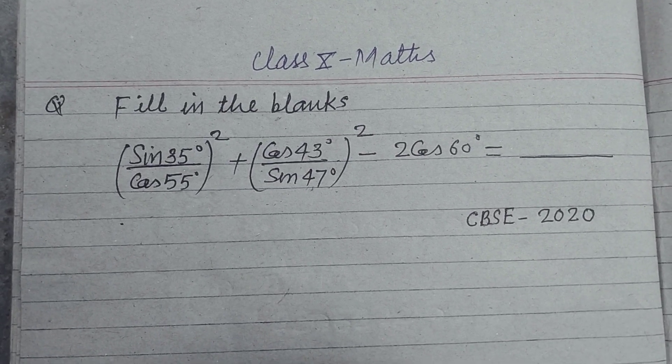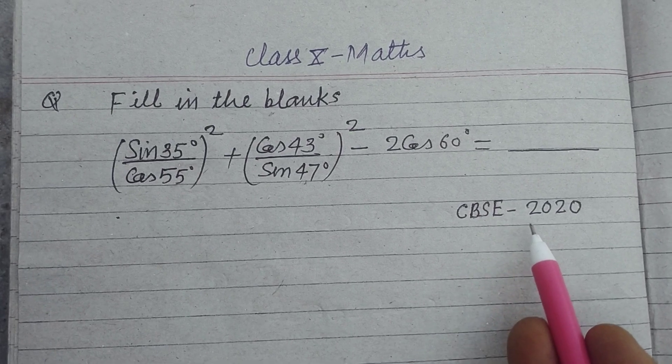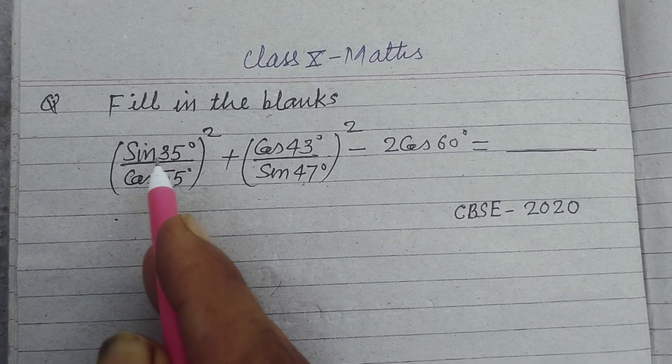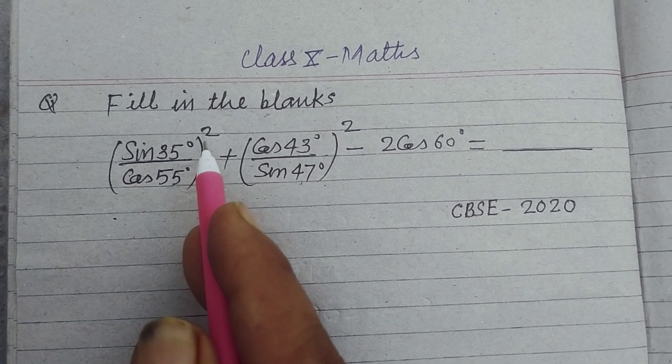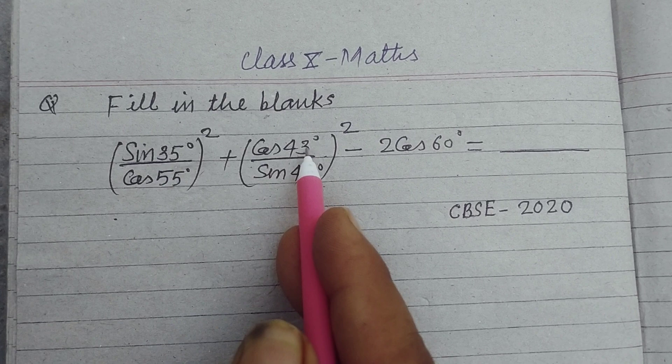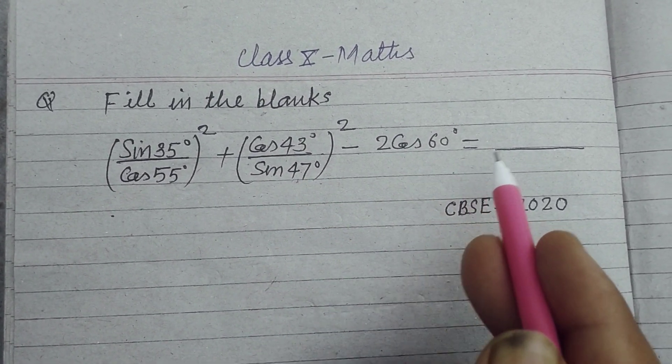Hello students, welcome to this YouTube channel. This question is from CBSE Class 10 2020 board exam. Fill in the blanks: (sin 35° / cos 55°)² + (cos 43° / sin 47°)² - 2 cos 60° equals blank.